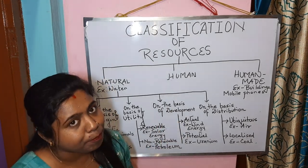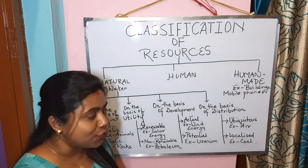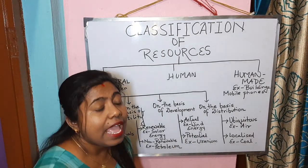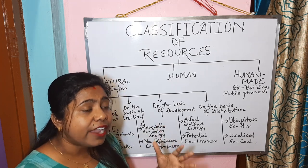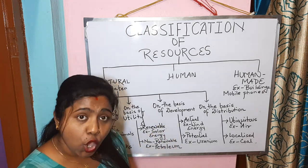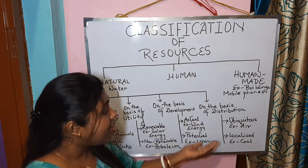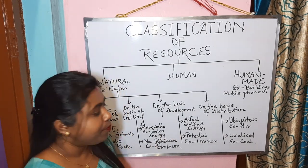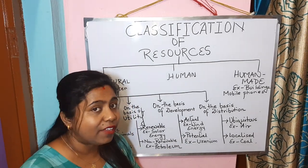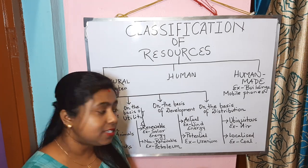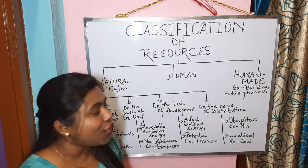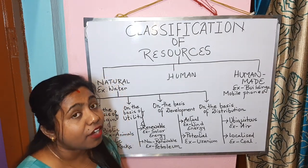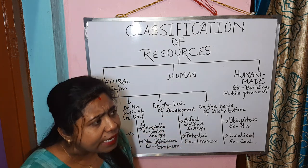On the basis of development, resources are subdivided into actual resources and potential resources. Actual resources are resources whose entire quantity is known to us, the technology required to utilize them is already available, and we are currently using them. For example, wind energy — we know where to get it, such as in Rajasthan, and we are utilizing it because we have the technology to harness it.